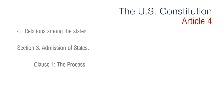Moving on to Section 3, it's regarding admission of states. Clause 1 is the process: new states may be admitted by Congress into this union, but no new state shall be formed or erected within the jurisdiction of any other state without the consent of the legislatures of the states concerned as well as of Congress. Only Congress has the power to admit new states to the union. Clause 2 is regarding public land — the federal government has the exclusive right to administer federal government public lands.